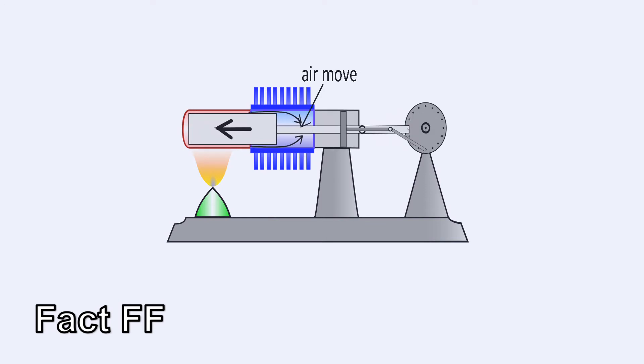As the displacer moves forth, it causes the air to go to the colder side of the cylinder. This causes the air to cool and contract, and the power piston is sucked inwards.